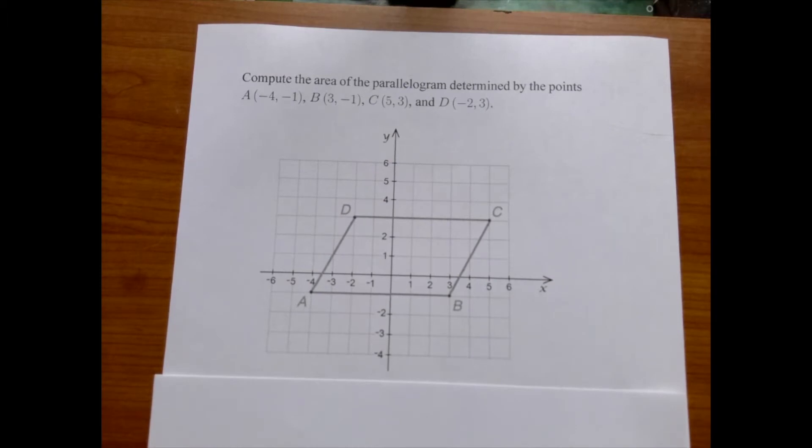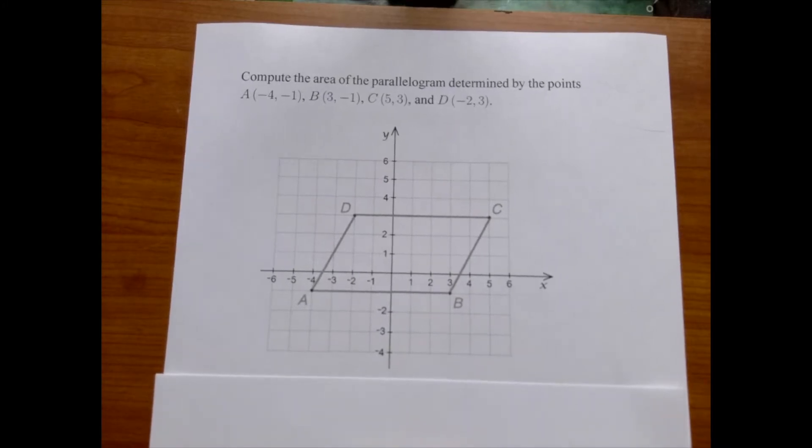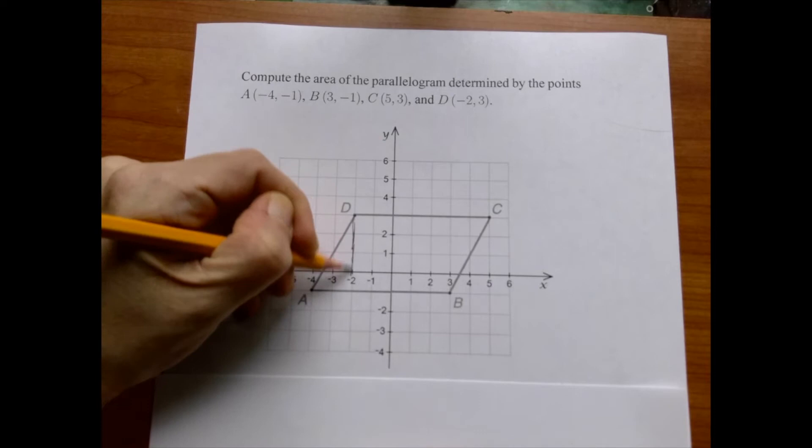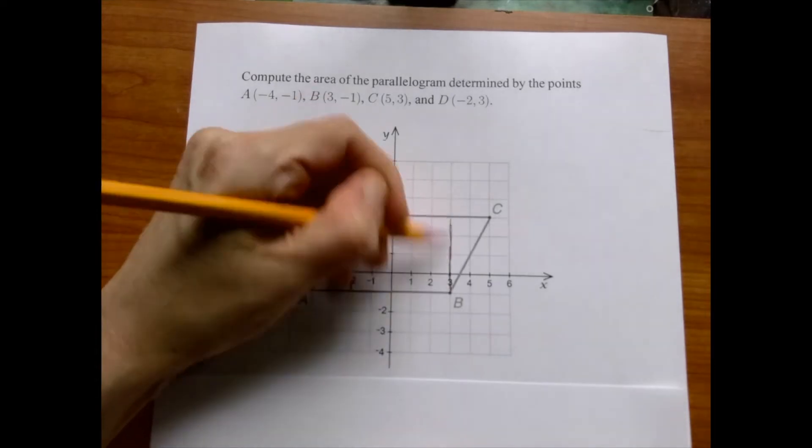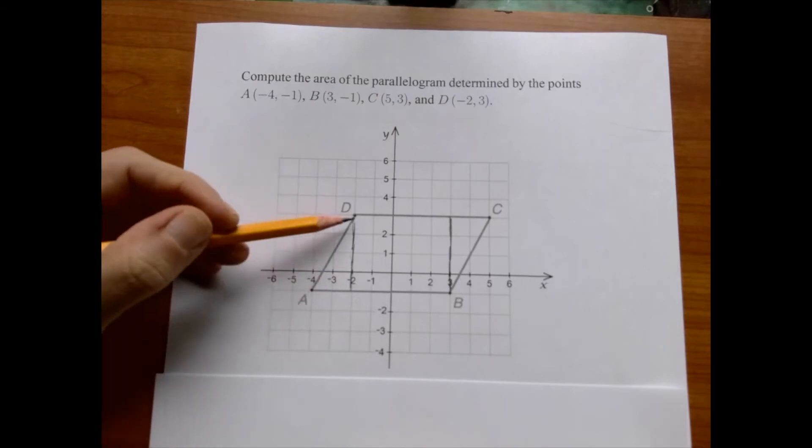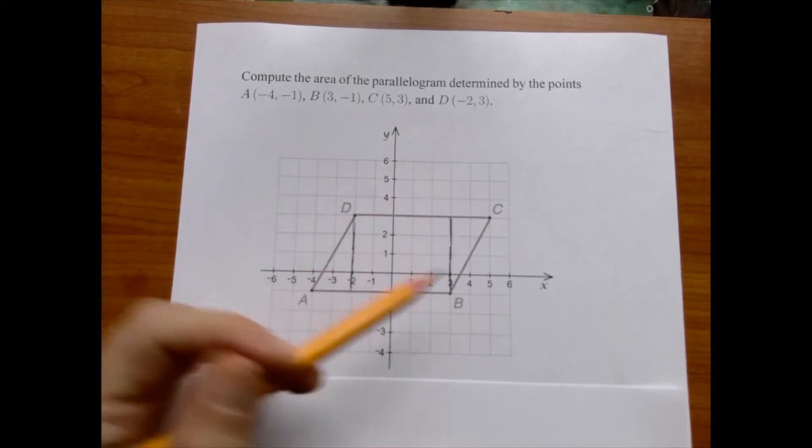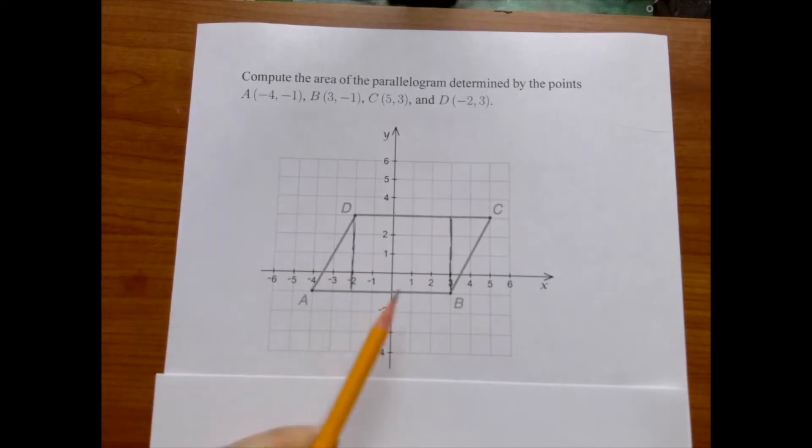What we're going to do here is we're going to cut this parallelogram apart along these two lines. And then what we have here, a right triangle. We can compute the area of that, another right triangle, same thing. Actually, it's the same. It's a congruent triangle. And in between, there is a rectangle.